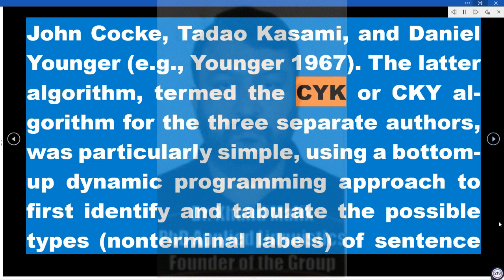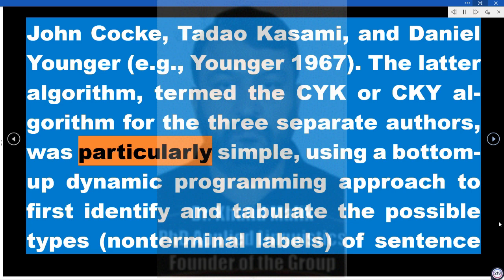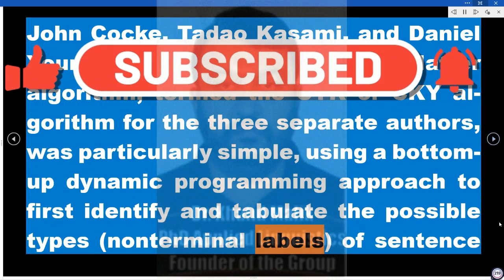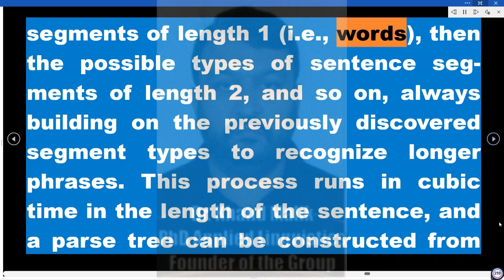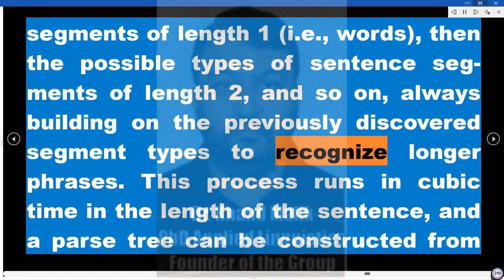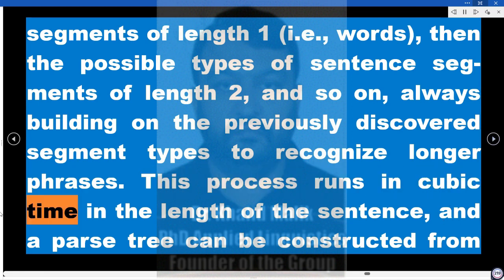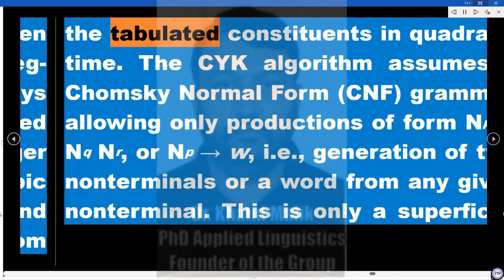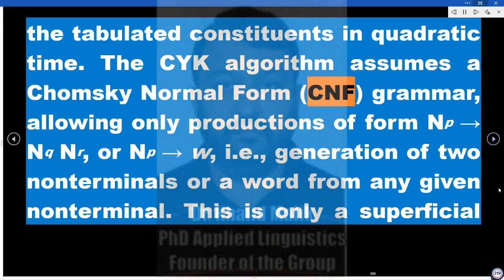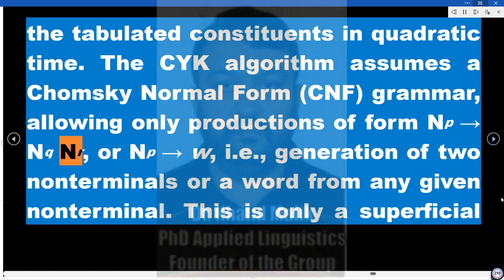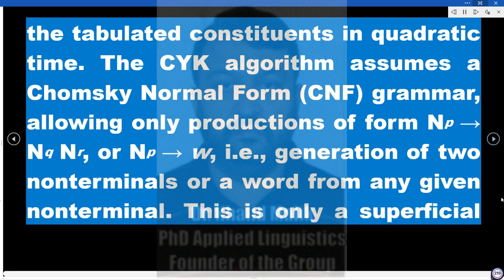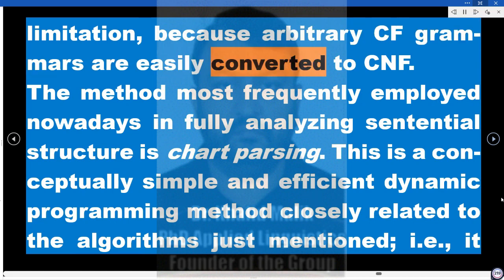The latter algorithm, termed the CYK (or CKY) algorithm for its three separate authors, was particularly simple, using a bottom-up dynamic programming approach to first identify and tabulate the possible types (non-terminal labels) of sentence segments of length 1 (i.e., words), then length 2, and so on — always building on previously discovered segment types to recognize longer phrases. This process runs in cubic time in sentence length, and a parse tree can be constructed in quadratic time. The CYK algorithm assumes a Chomsky Normal Form (CNF) grammar, allowing only productions of form NP→NQ NR or NP→W; arbitrary CF grammars are easily converted to CNF.